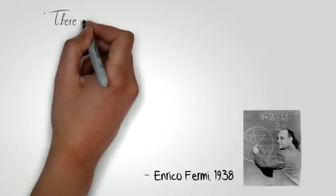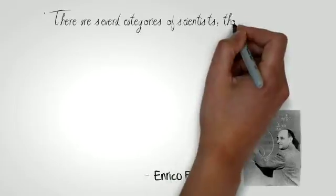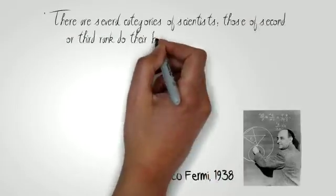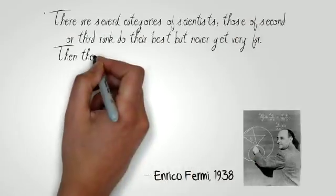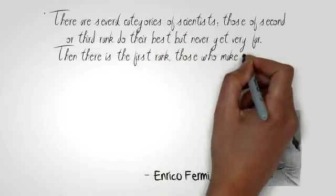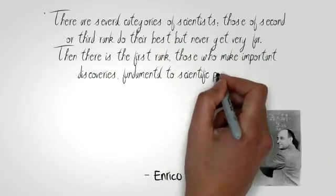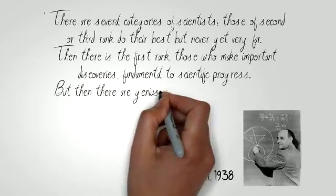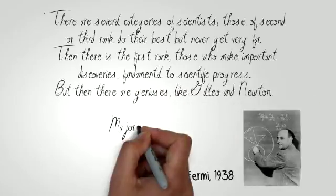There are several categories of scientists. Those of second or third rank do their best but never get very far. Then there is the first rank, those who make important discoveries fundamental to scientific progress. But then there are geniuses, like Galileo and Newton. Majorana was one of these.